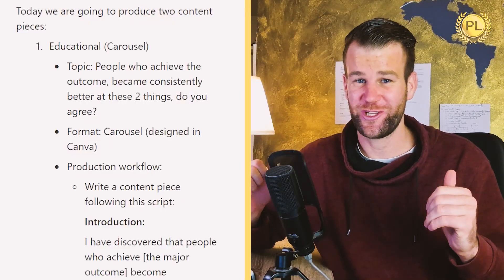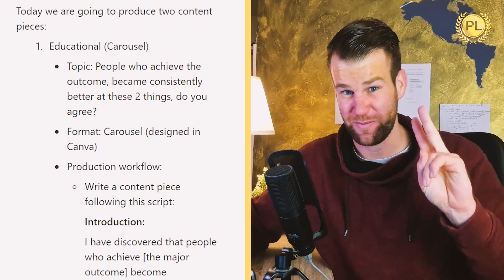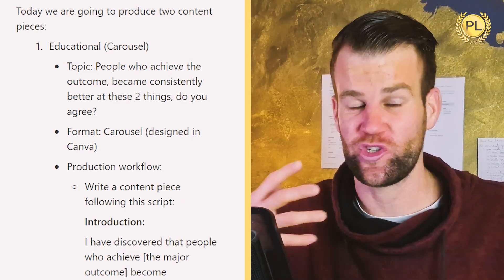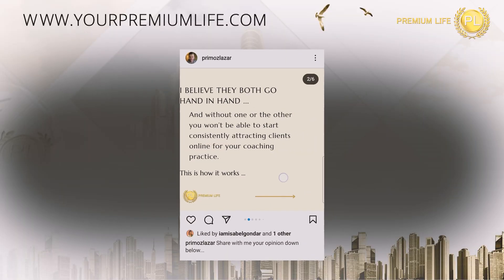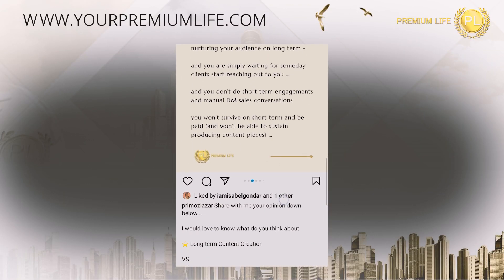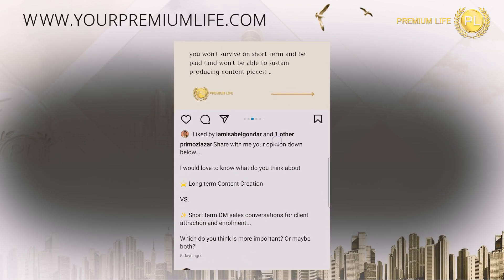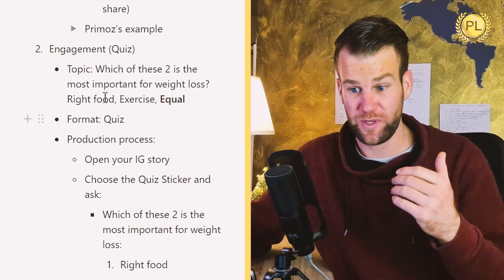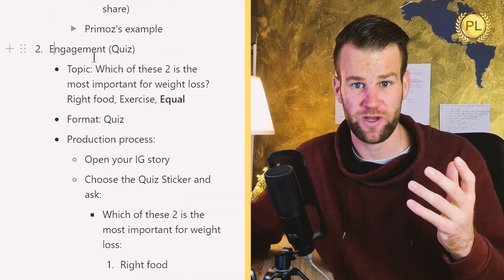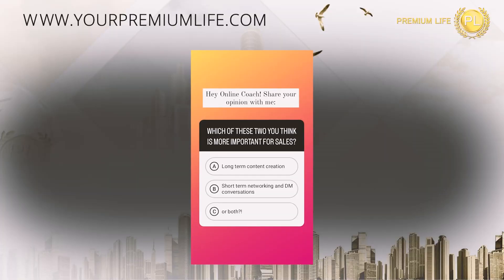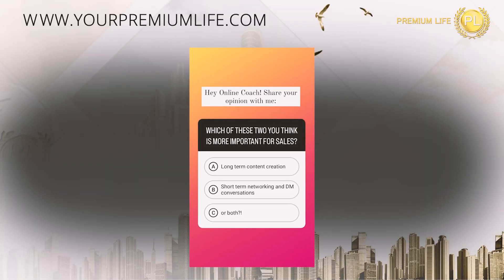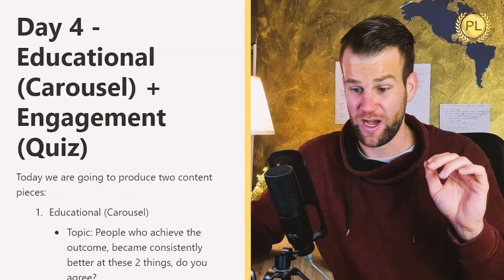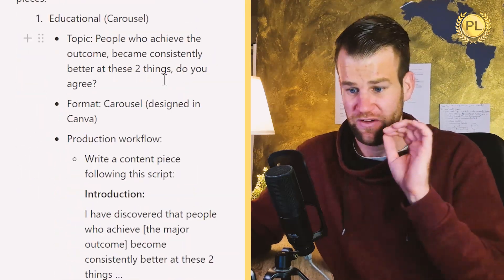Today we are going to produce two types of content pieces. The first is going to be educational content in a format of carousel images that people can slide through on Instagram. The second type is going to be an engagement content piece in the format of a story quiz. Let's begin now with the first one.